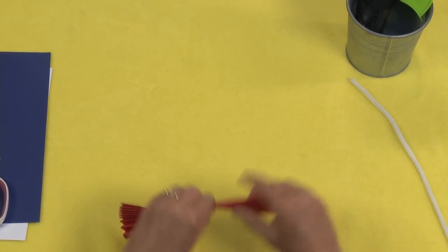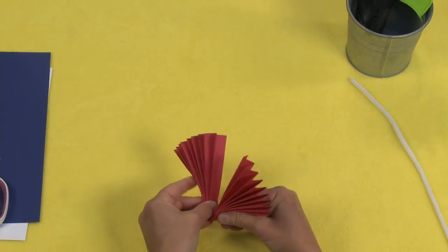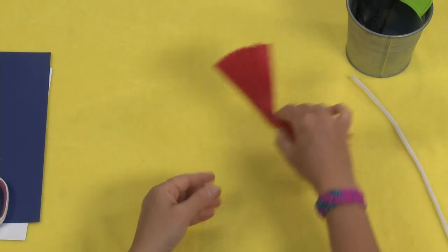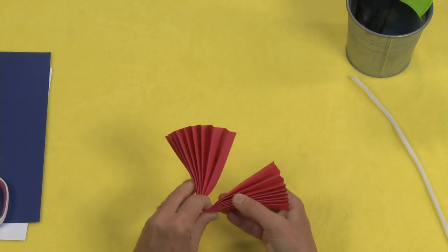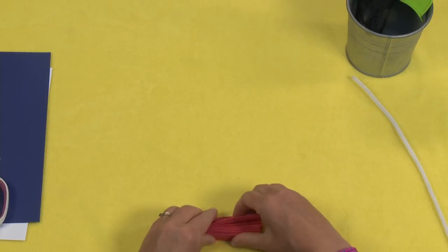Now take your paper and find the center and fold it in half, kind of like a mustache, just right in half like that.